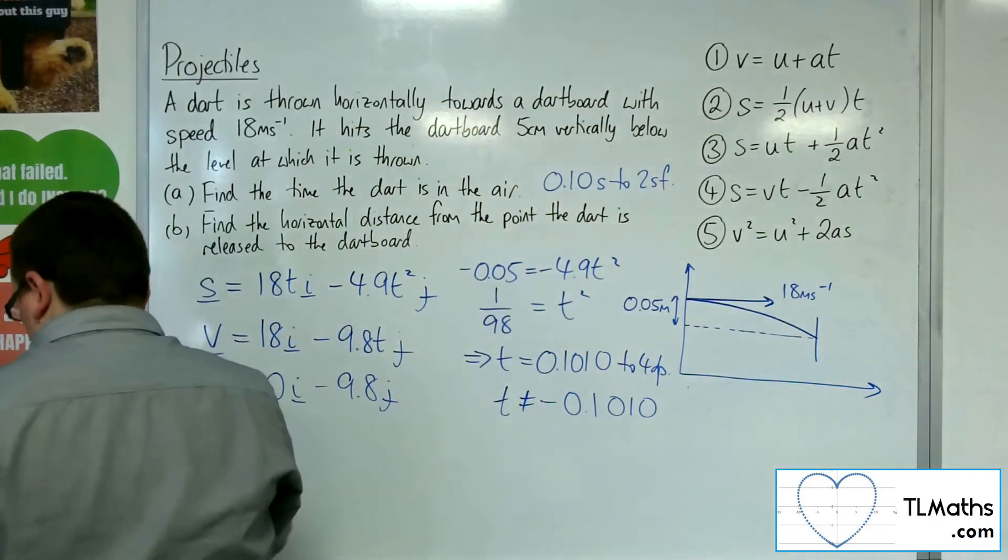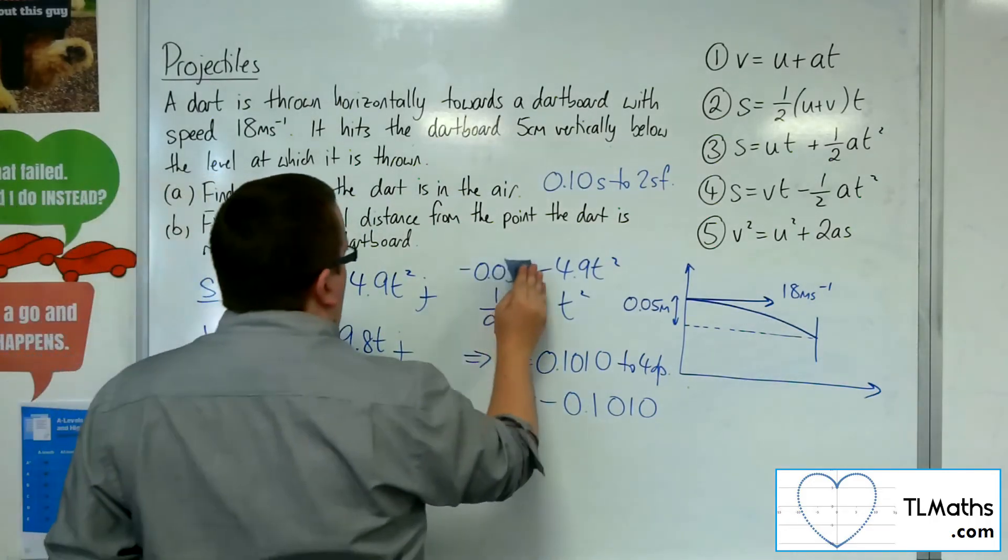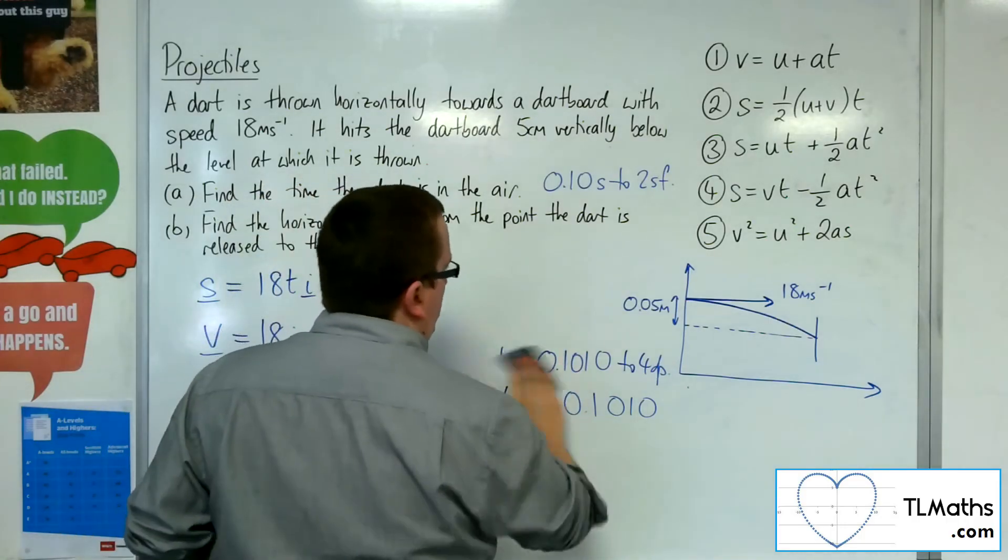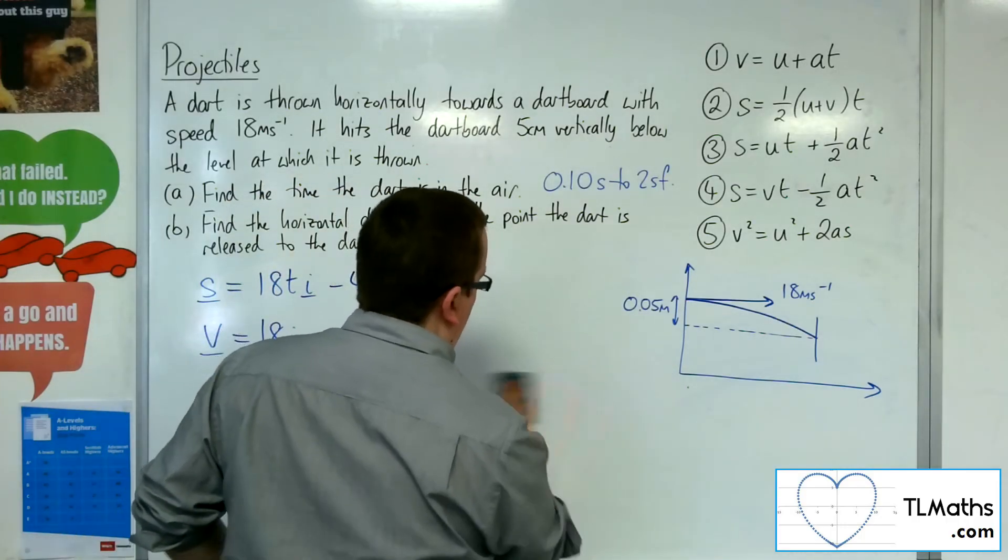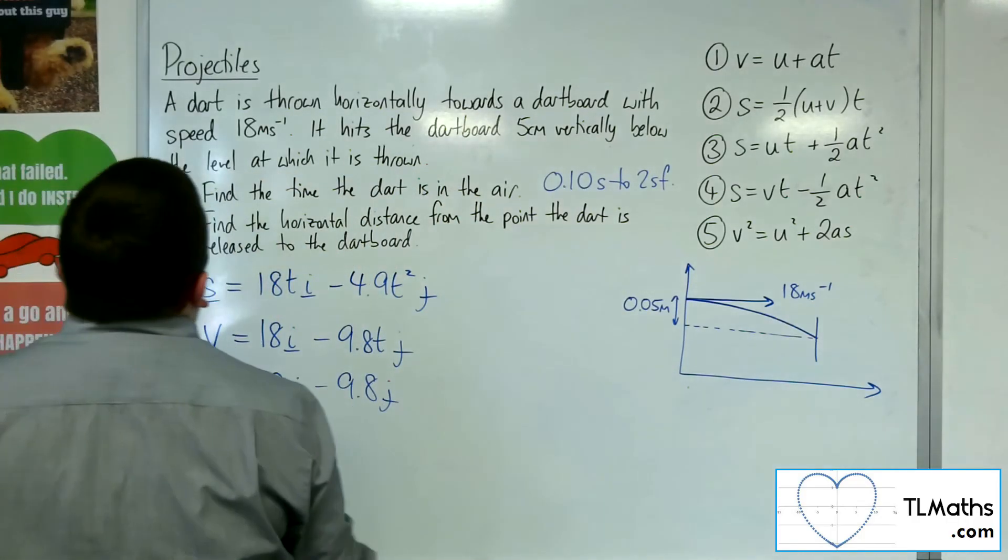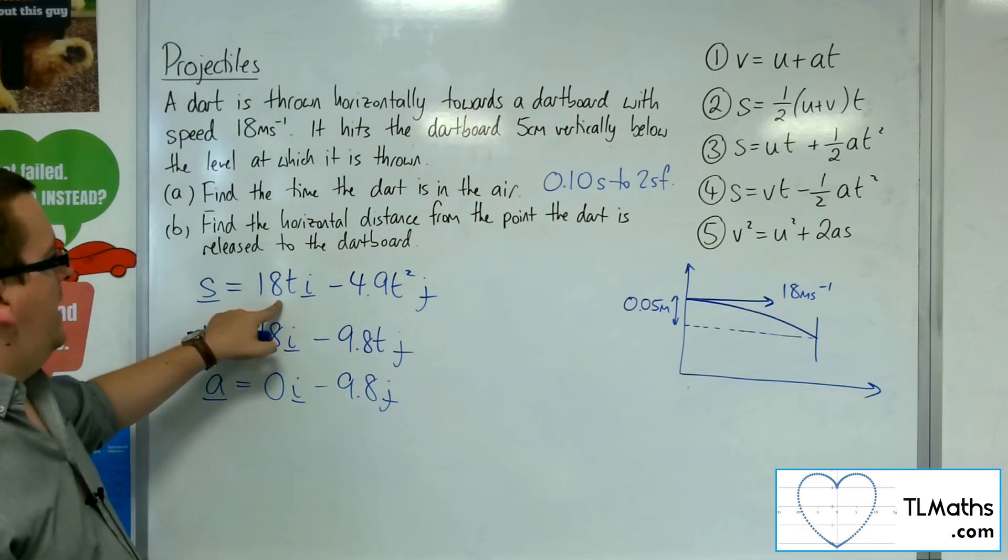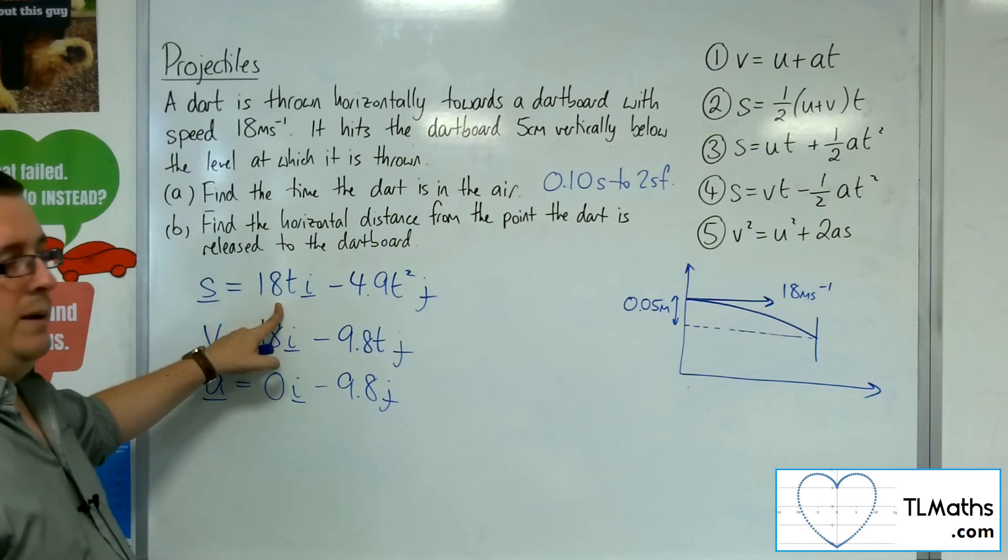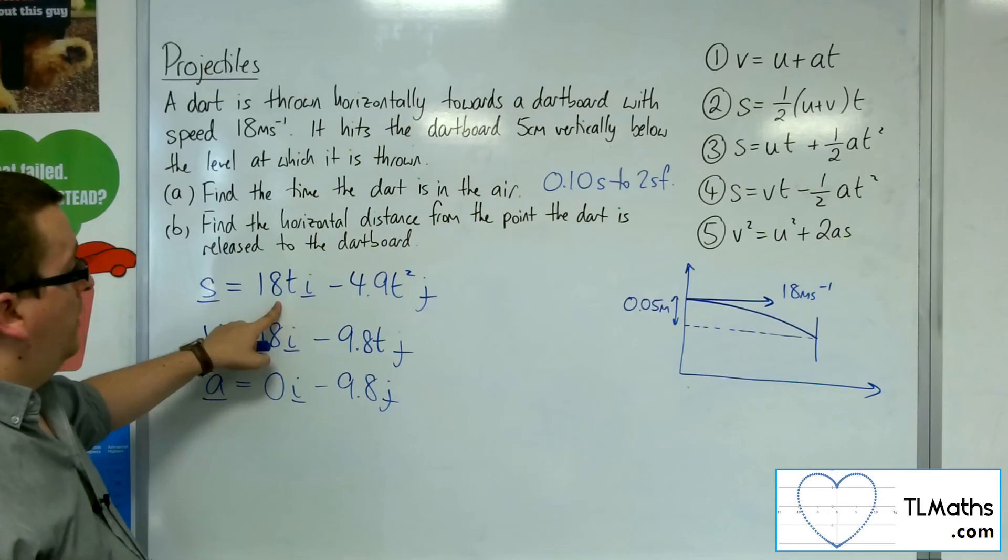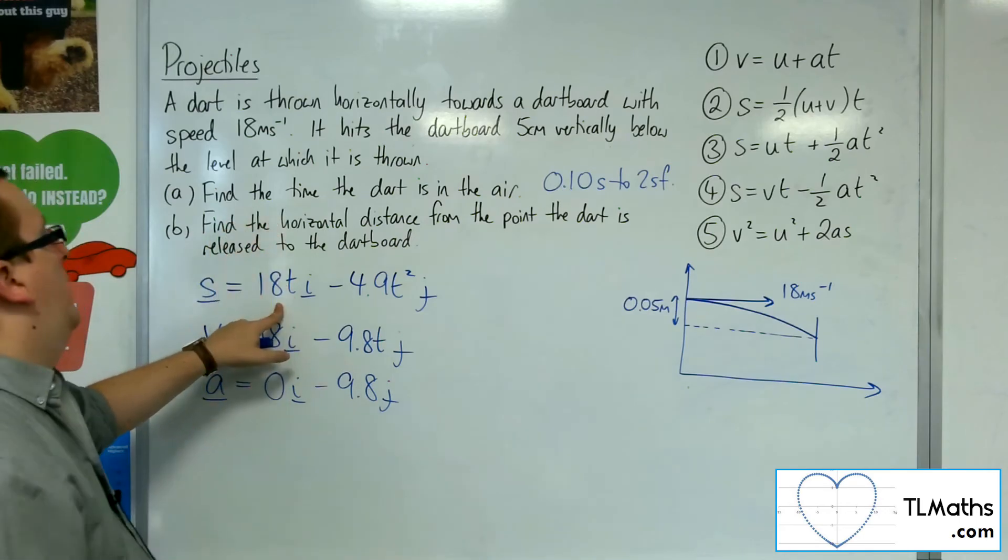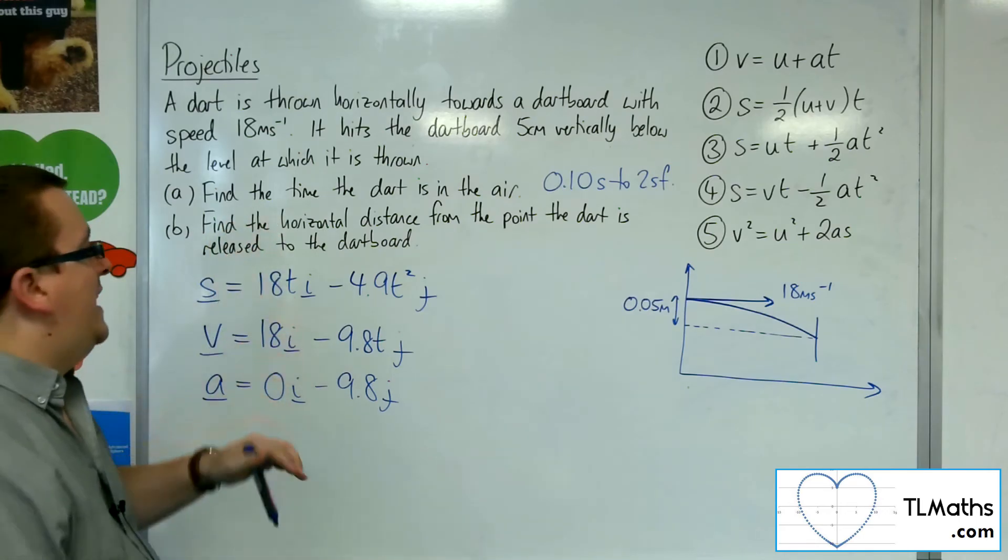Right. So let's crack on with B. So what's B asking? Now B is asking find the horizontal distance from the point that dart is released to the dartboard. So that is the horizontal displacement. I now know what t is because I worked that out in part a. That's how long it takes to actually get there.